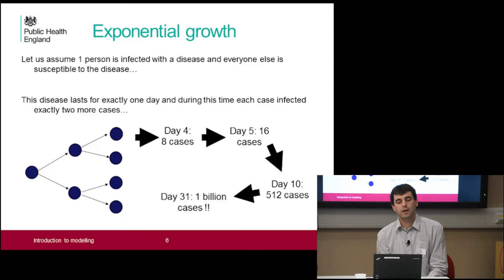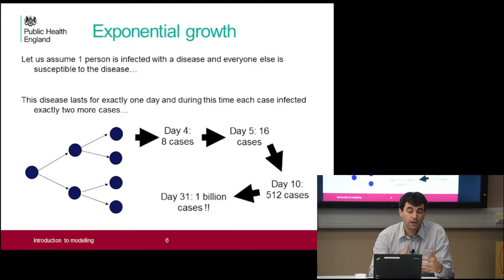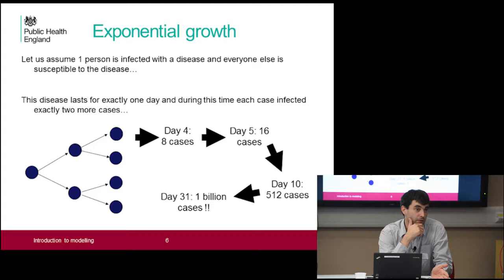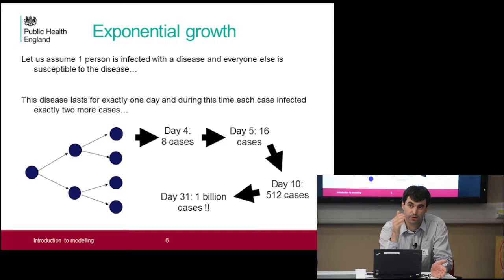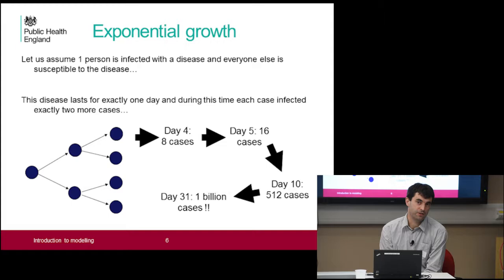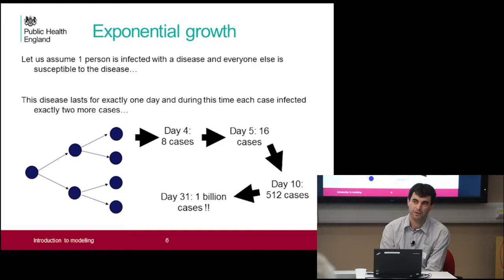Looking at how we model disease spread, let's start with a simple toy model. You've got one infected person guaranteed to meet two people a day, and they're infectious for one day. So the first day you've got one person, next day two, then four, and so on. If you follow that algorithm to its conclusion, after 31 days you've got a billion cases, and after 32 days you'll have more than the population of the world. Diseases don't really travel that fast — even SARS or flu don't travel through the whole world in a month. So something is wrong in that model.